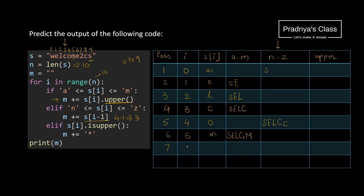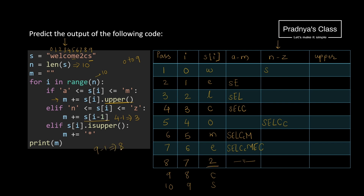In the seventh pass, I becomes 6 and the next character is E — it also gets converted to capital letter. After E we have digit 2. There is no criteria for digits in the code, so the string remains as-is. The next letter is C, which gets converted to capital C. Finally, we reach the end of the string. The last character is S.